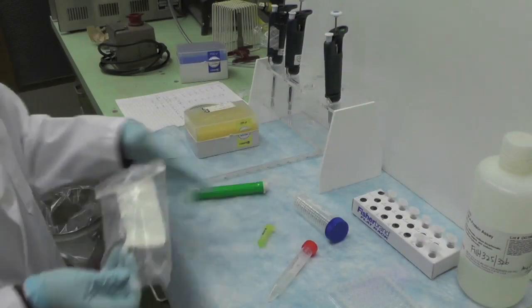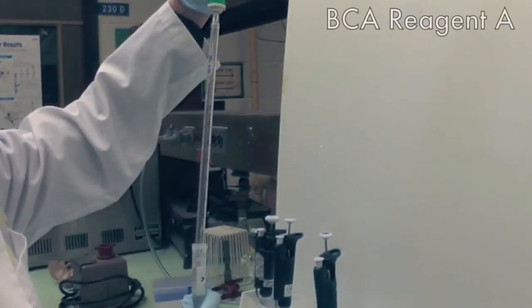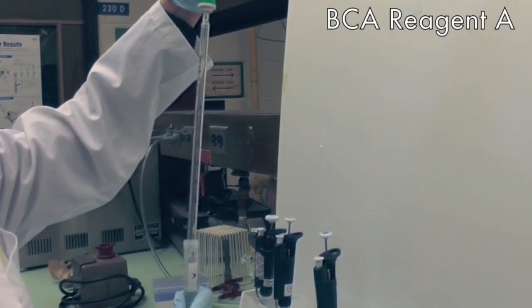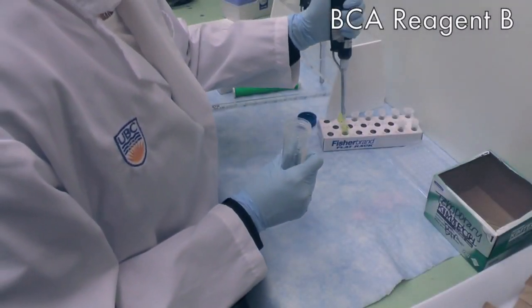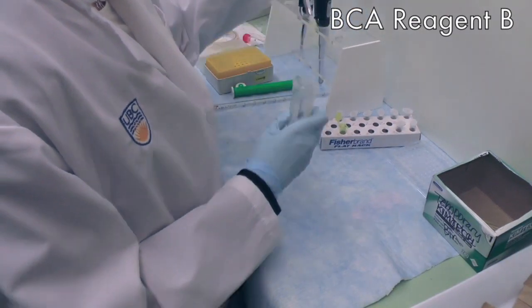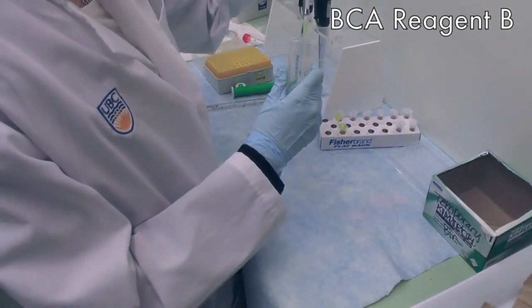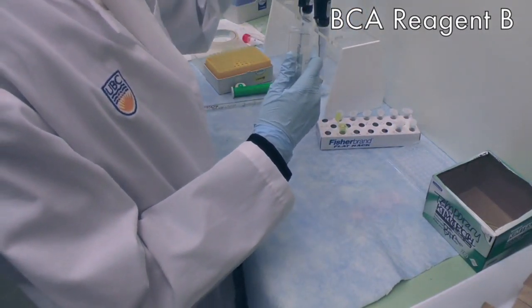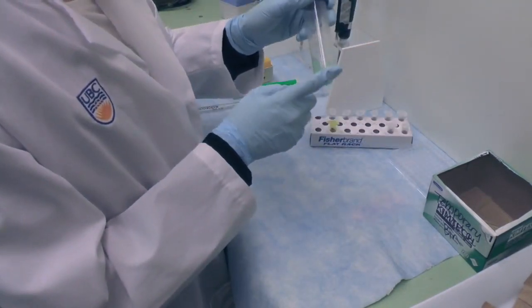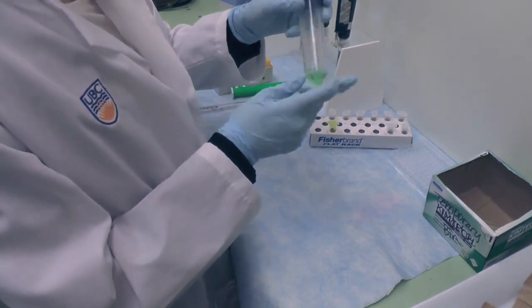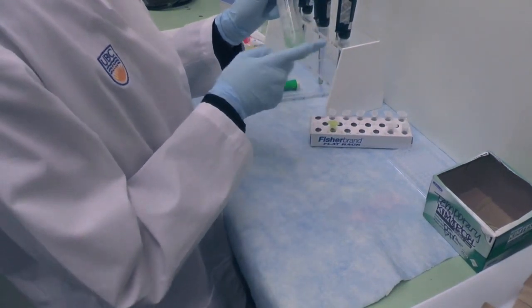Next, pipette the proper amount of BCA reagent A into the falcon tube. Then add the proper amount of BCA reagent B and mix to produce the BCA working reagent. Be aware that each well needs 200 microliters of the BCA working reagent, so make sure you prepare enough working reagent for the assay.